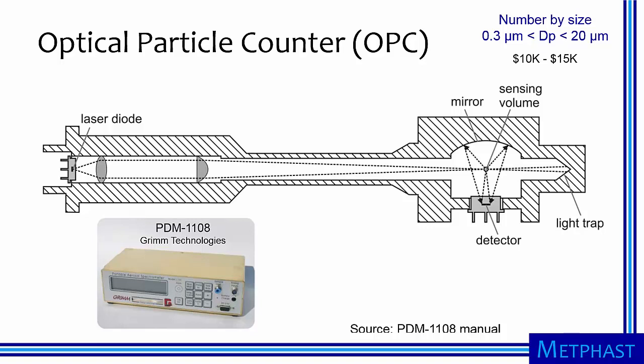The light from a laser diode is shaped with lenses to illuminate a sensing volume. A detector measures the intensity of the light scattered by each particle that enters the sensing volume. The intensity of scattered light is used to classify the particle by size, with larger particles scattering more light than smaller ones.